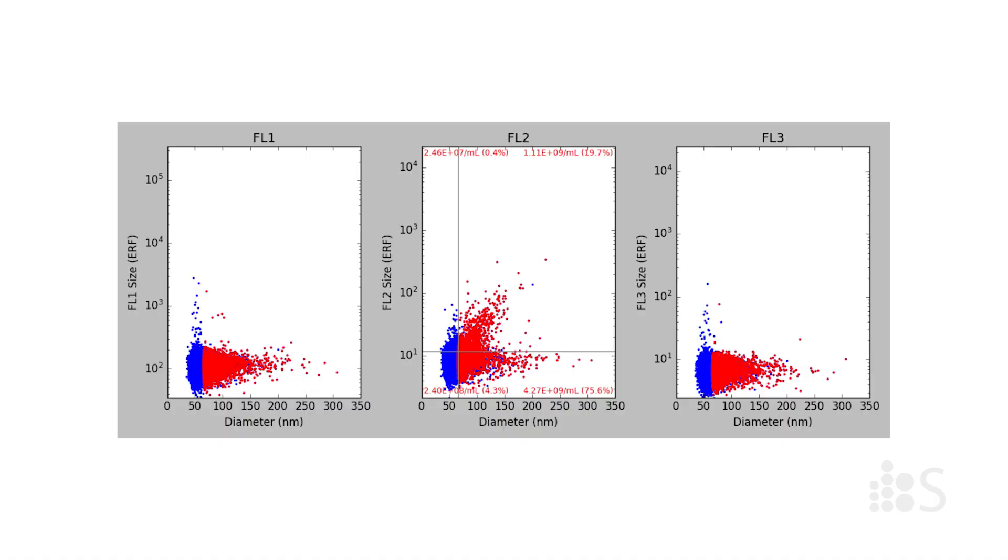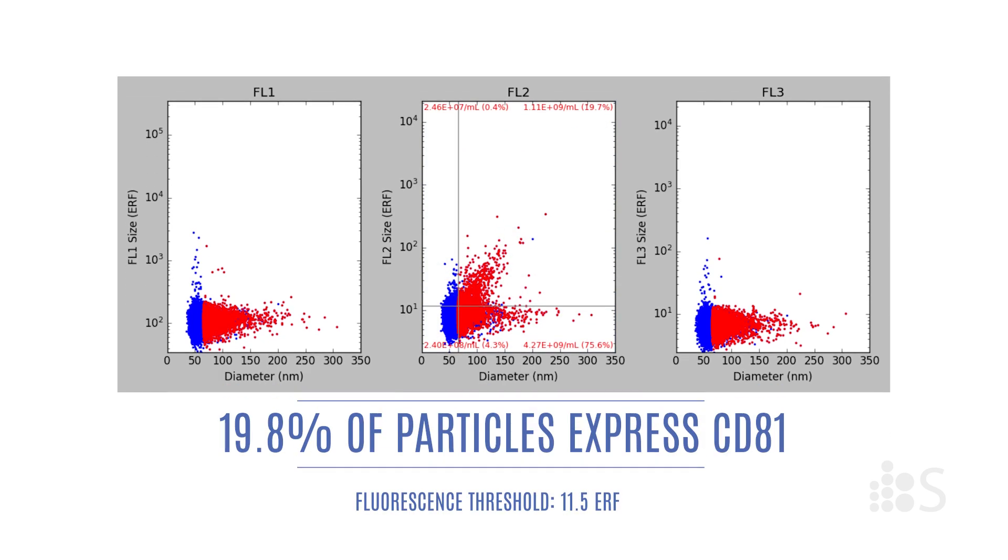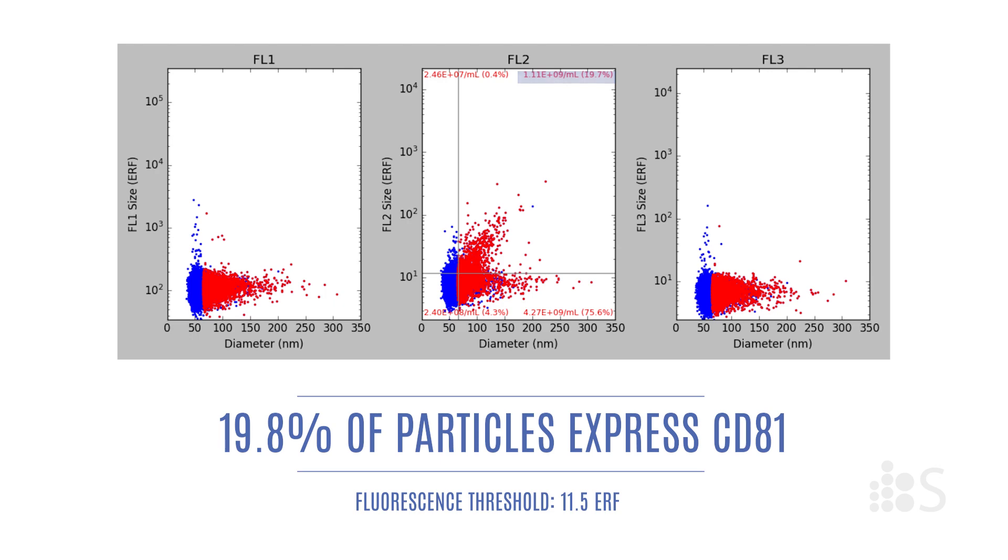These plots show that the EVs are showing up primarily in the PE channel, as expected. Using the quadrant tool, we can see that 19.8% of all particles in the sample express CD81.